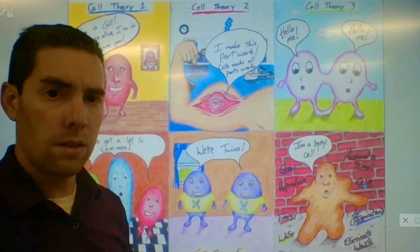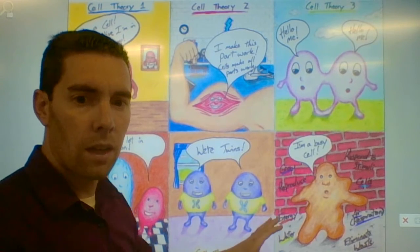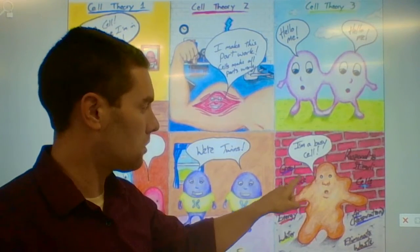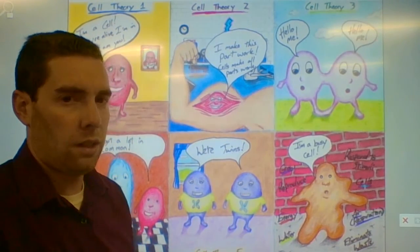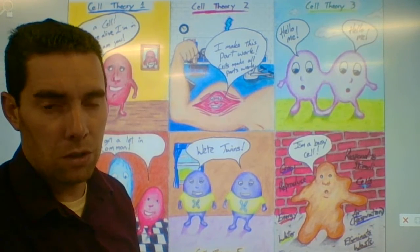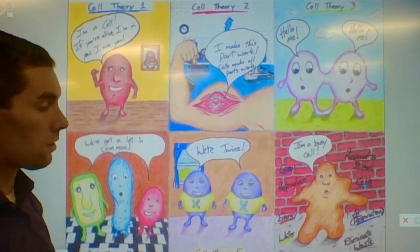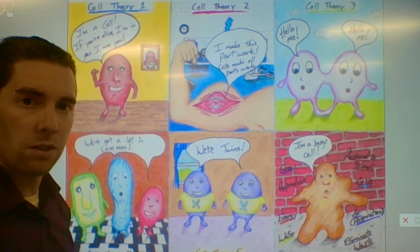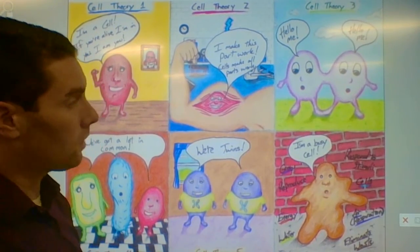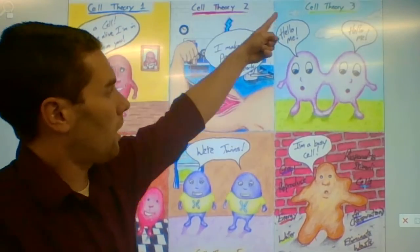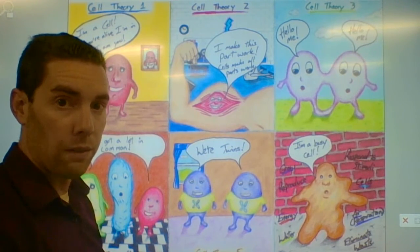The last one — cell theory six — is that every single cell takes care of all the characteristics of life. I put 'I'm a busy cell,' and if you could see it up close it has each of the eight characteristics of life around it. You don't need to have the same thing as me — I've seen a lot of brick walls and checkered floors over the years. You just need interesting backgrounds that are fully colored. Points breakdown: six points for labels, six for color, six for captions, and six for writing the cell theory statements on the back — that's 30 points total.